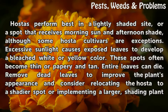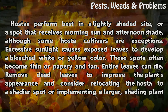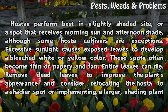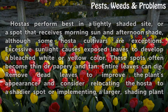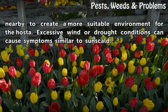Sun scald. Hostas perform best in a lightly shaded site or a spot that receives morning sun and afternoon shade, although some cultivars are exceptions. Excessive sunlight causes exposed leaves to develop a bleached white or yellow color. These spots often become thin or papery, and entire leaves can die. Remove dead leaves to improve the plant's appearance, and consider relocating the hosta to a shadier spot or adding a larger shading plant nearby. Excessive wind or drought conditions can cause symptoms similar to sun scald.